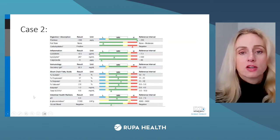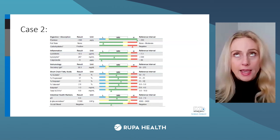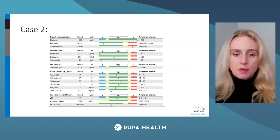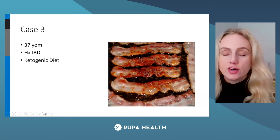For case two's stool chemistries: digestion and absorption look very healthy. Inflammatory markers look healthy. IgA is definitely low — we're going to use vitamin A, vitamin D, and zinc. For this case, thinking about intestinal permeability, I'm also considering glutamine, marshmallow, and similar supports. Beta-glucuronidase is too high, but her short-chain fatty acids look good.